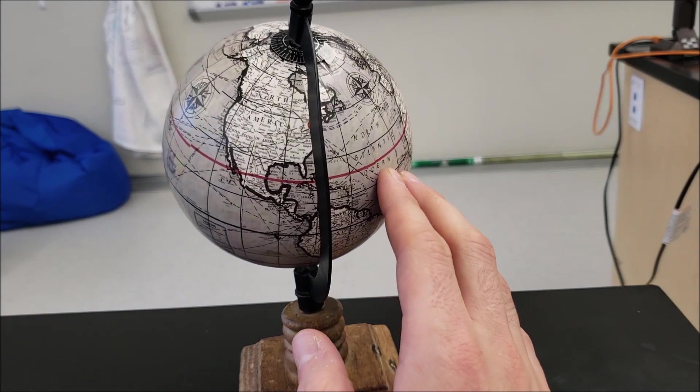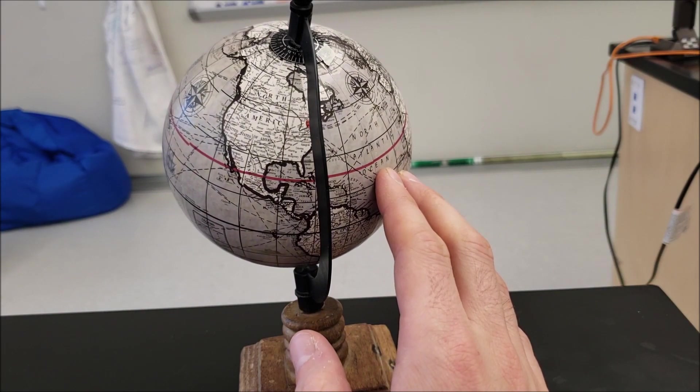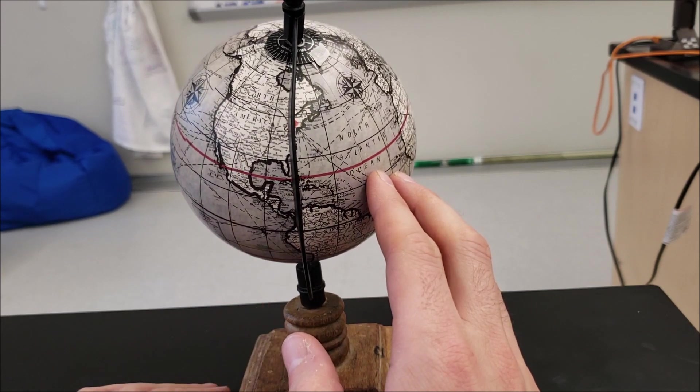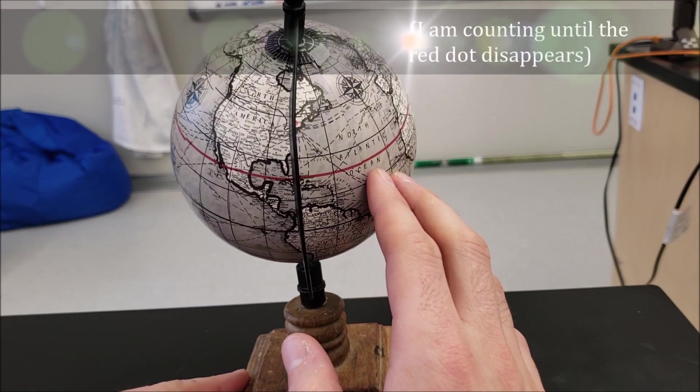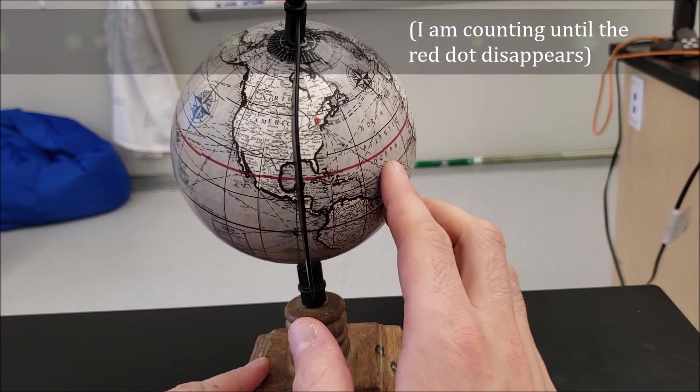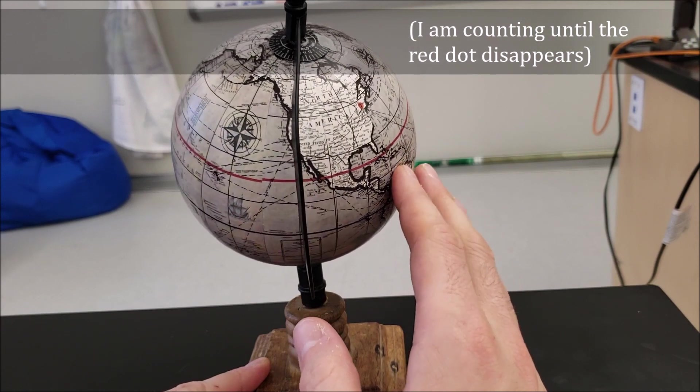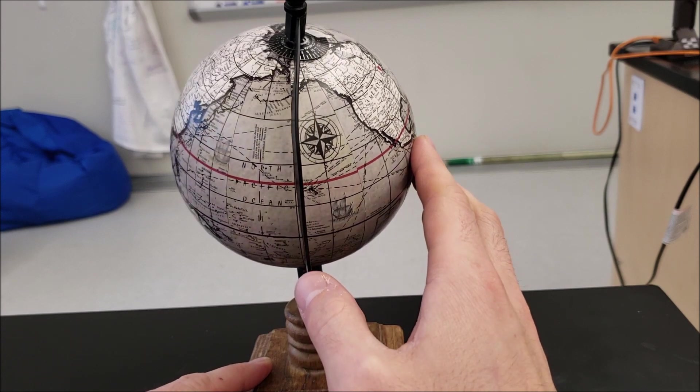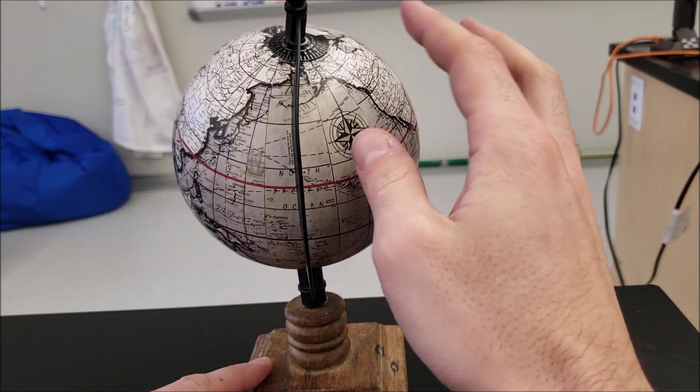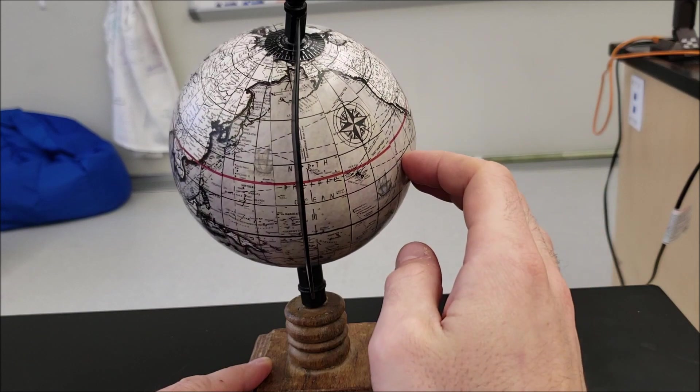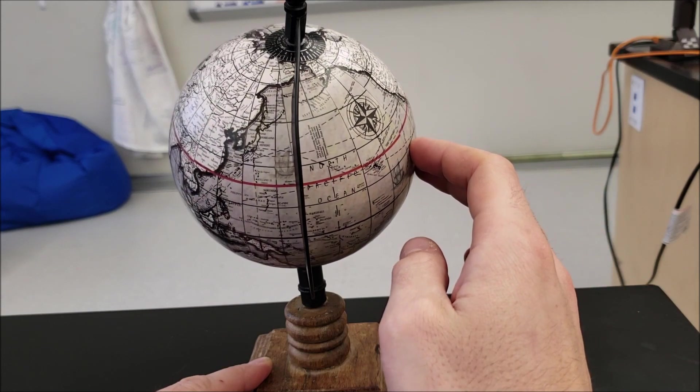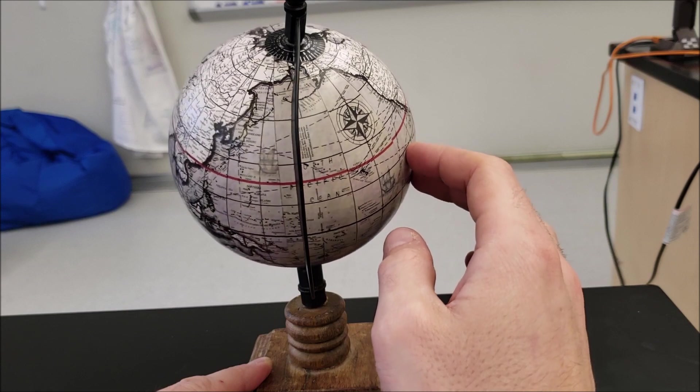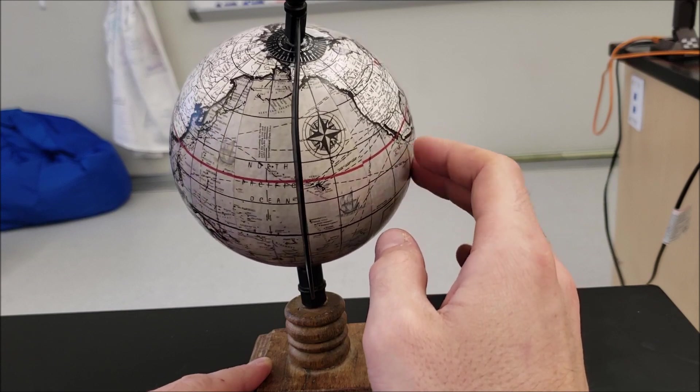We're going to count. So how many hours are we exposed to daylight? Let's go one way. One, two, three, four, five, six, seven, starting to lose the red dot. It's right up here. Eight-ish. Okay, about eight. So you kind of lose track of the red dot. Let's call it seven and a half hours.